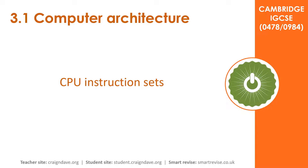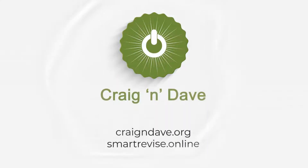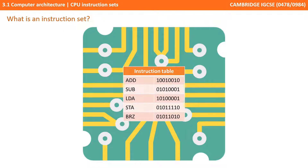In this video we're going to be looking at CPU instruction sets. At the core of all computers is what is known as the instruction set. This is effectively the set of all instructions written in machine code that can be recognised and executed by a given processing unit or CPU.